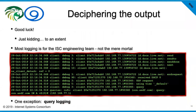Deciphering the output — my initial thought was 'good luck,' and only partly joking, because a lot of the debugging messages really aren't useful to the mere mortal. I look at these and I can go in and figure out where in the code something is being generated, but it really doesn't do me much good. Most of the logging is really for the engineering team — the BIND engineers are going to be able to take this and find real use in it. There is one major exception where logging is easy and something you as an administrator need to do: query logging.